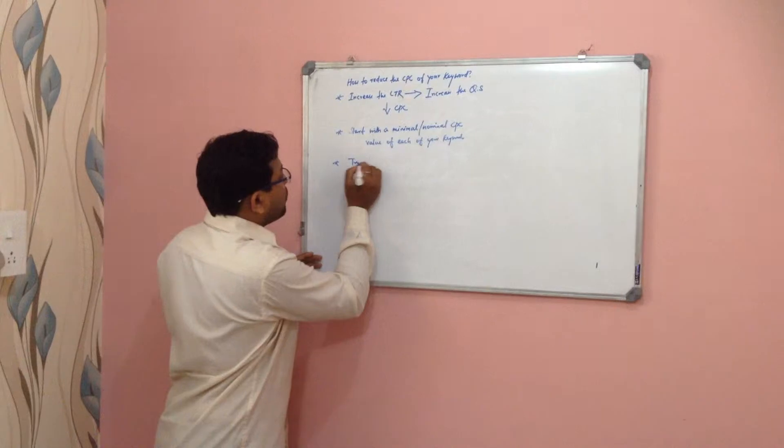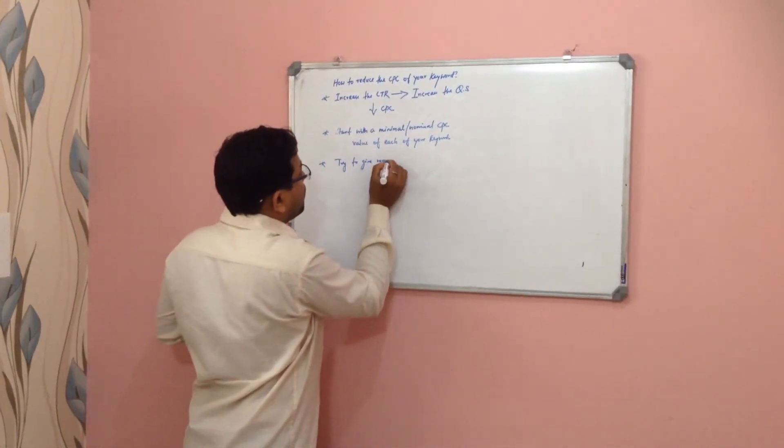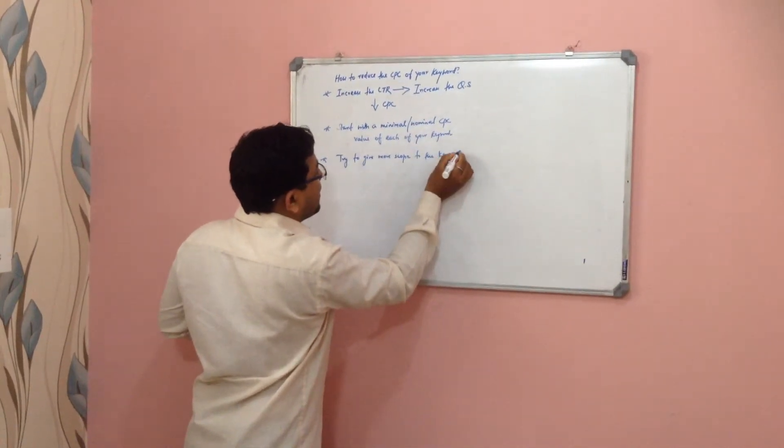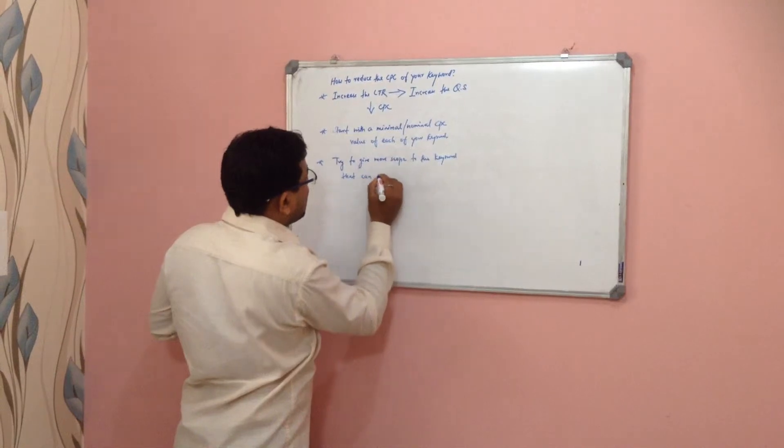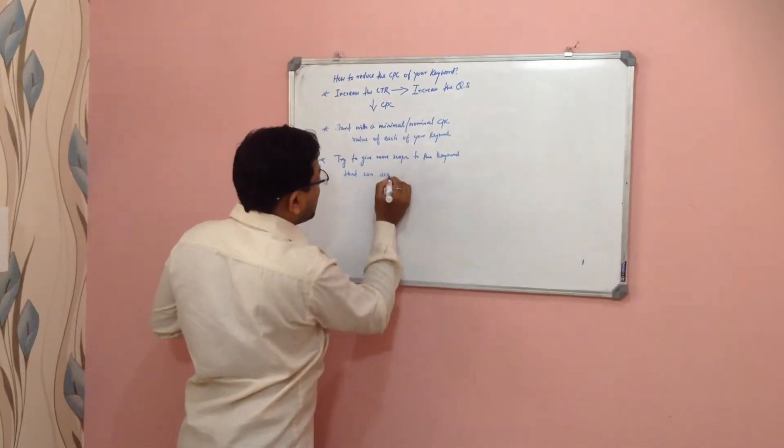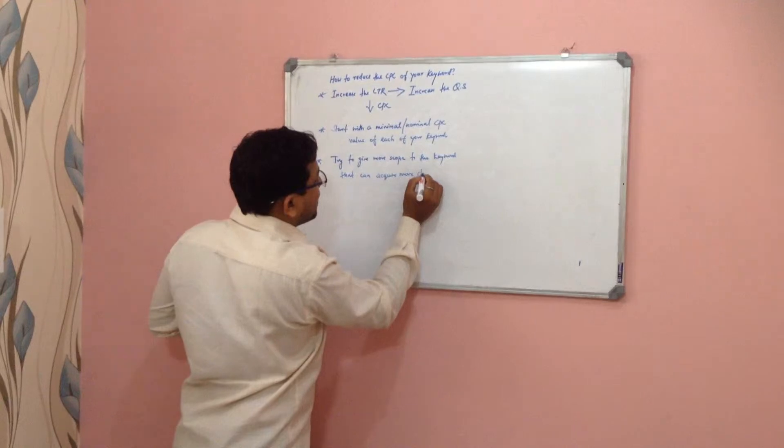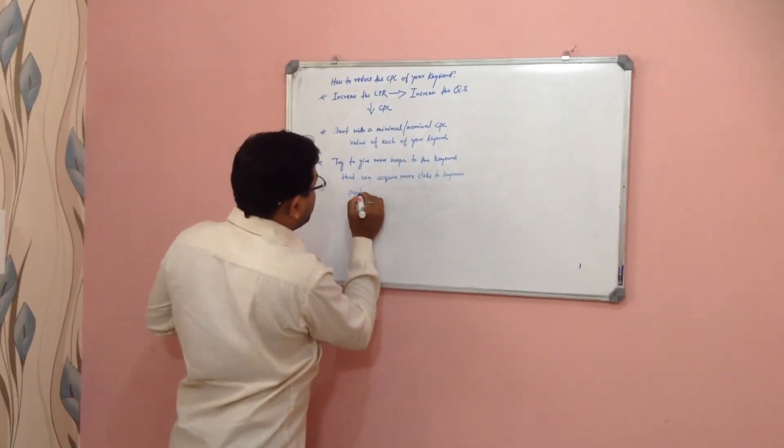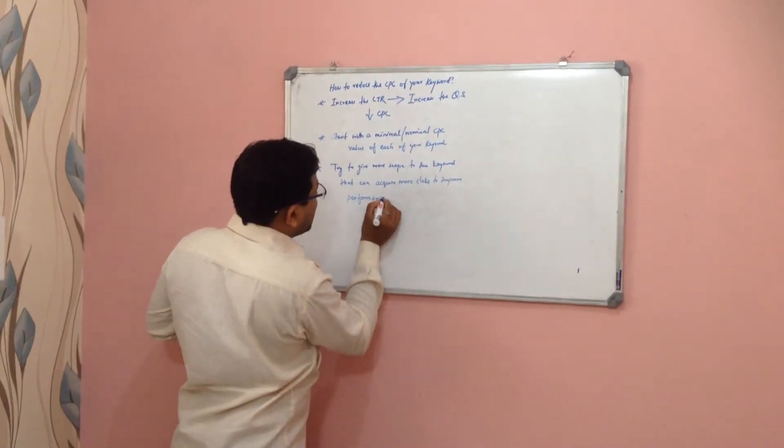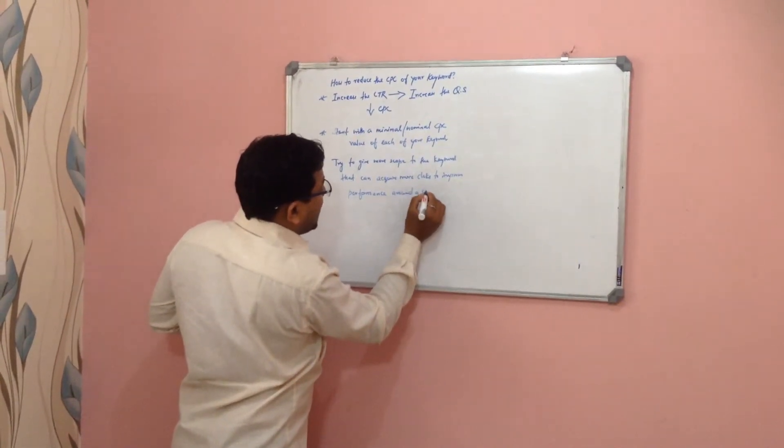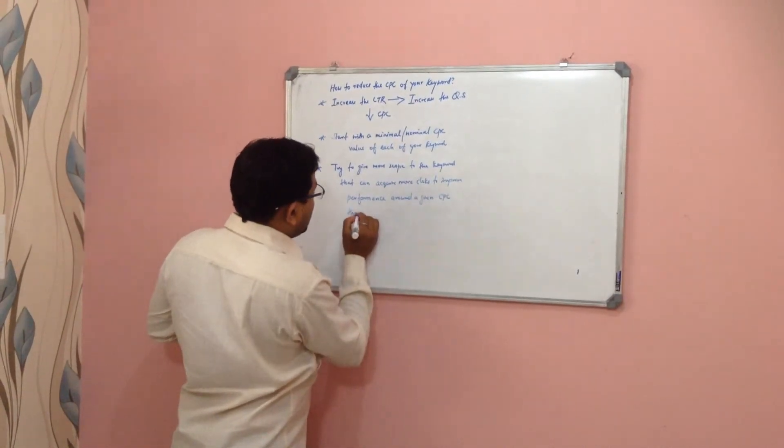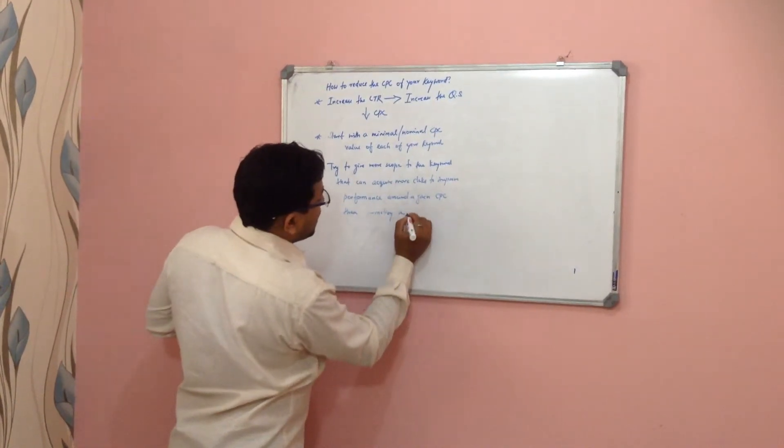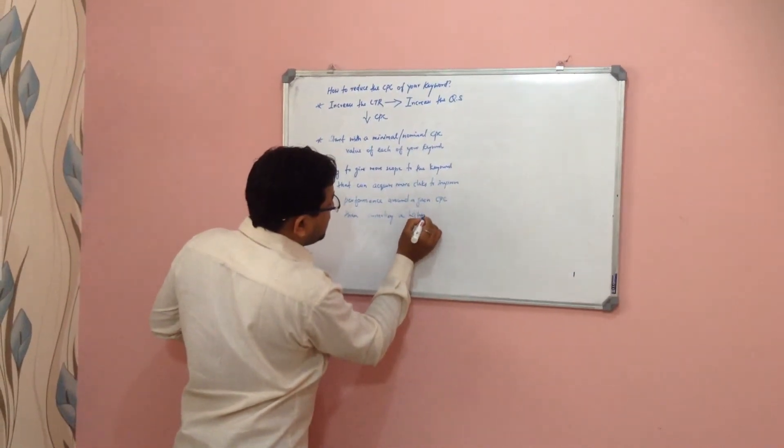Try to give more scope to the keyword that can acquire more clicks to improve performance around a given CPC, then promoting a higher CPC keyword.